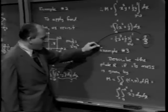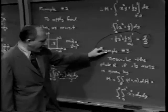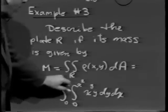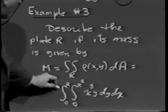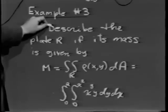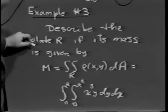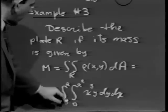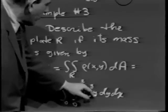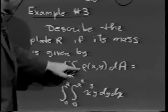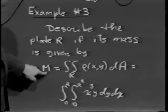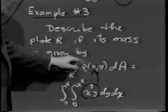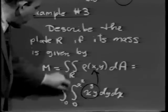A very nice counterpart to example 1: example 1 asked us to compute this antiderivative. What I'd like to do now is emphasize the fundamental theorem by wording this a different way. I want to describe the plate R if its mass is given by the double integral over the region R of ρ(x,y) dA, which turns out to be the integral from 0 to 2, 0 to x squared, of x³y dy dx. What is this region R? Notice that the limits of integration determine the region R.